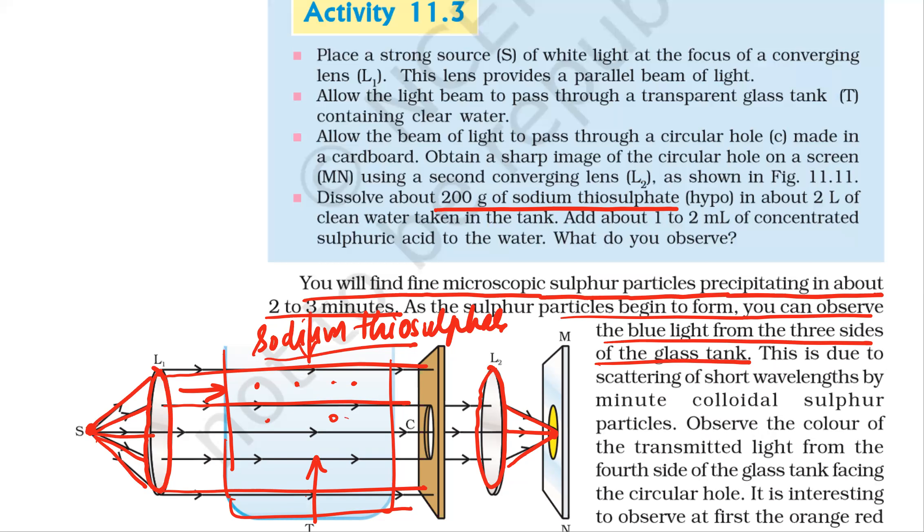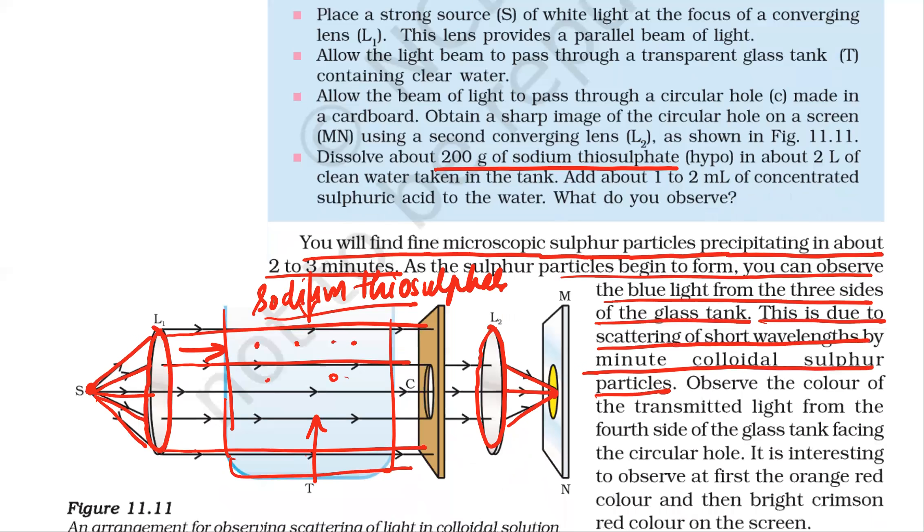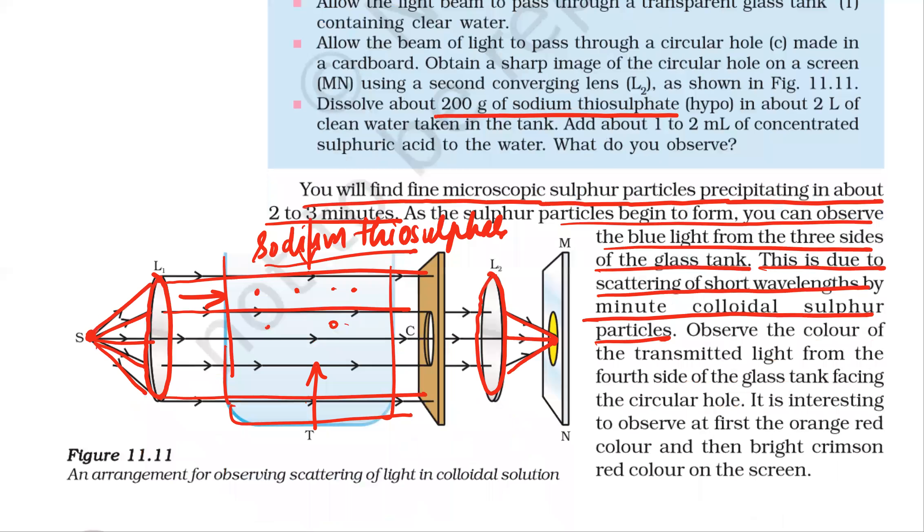This is due to the scattering of short wavelengths by the minute colloidal sulfur particles. These small particles scatter light, and because of that you can see the blue color. Observe the color of transmitted light from the fourth side of the glass tank.